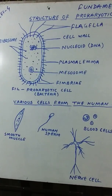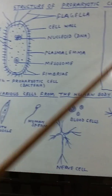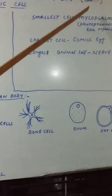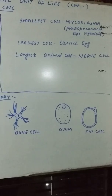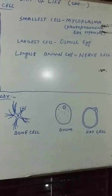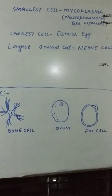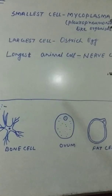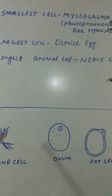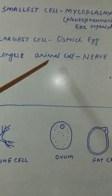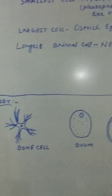We should know that mycoplasma — also called pleuro-pneumonia-like organism — is the smallest cell. The largest cell is the ostrich egg. The longest animal cell is the nerve cell.